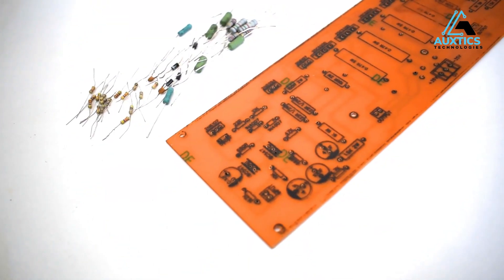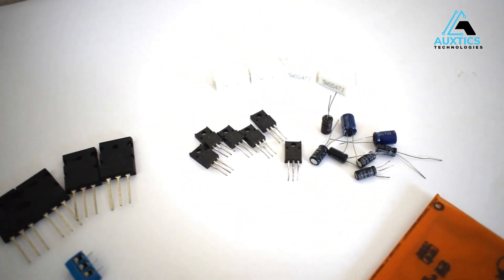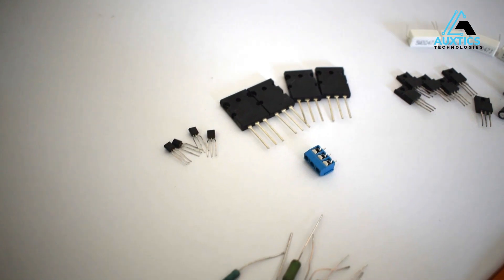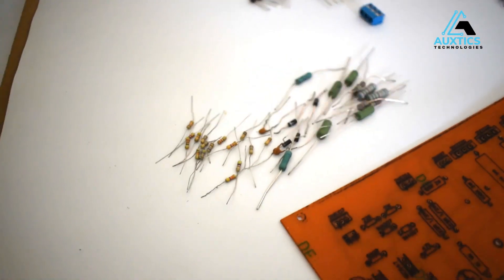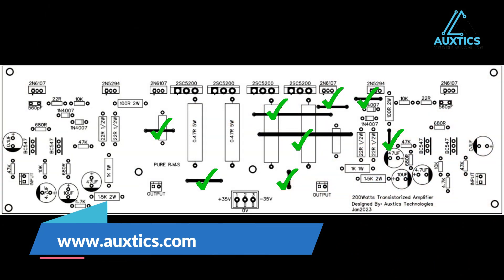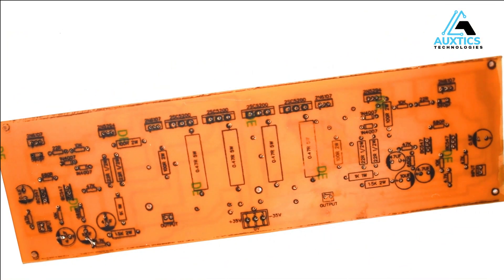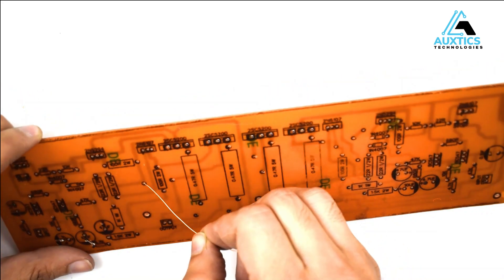Here is the PCB and all the components that are required to build this circuit. You can get the schematic file, the PCB files, the Gerber files from our website www.auxtics.com. So here is the front PCB layout for our reference and we will start from all of the jumpers used in this circuit.